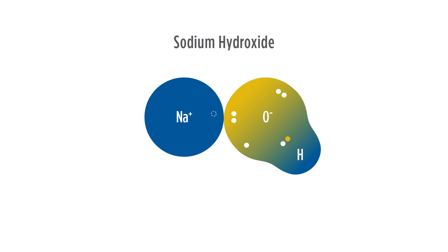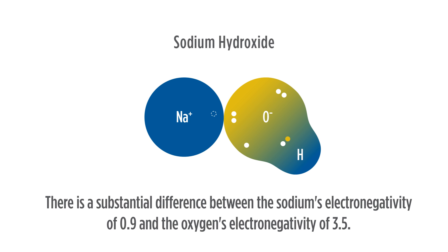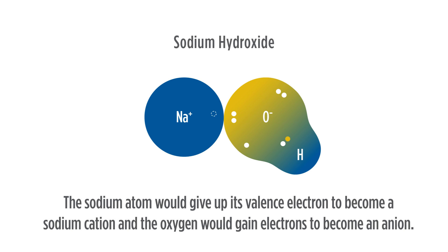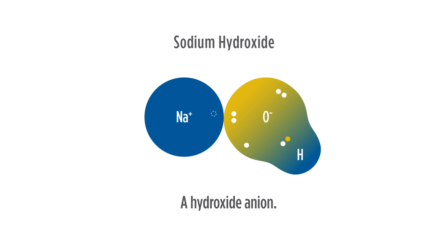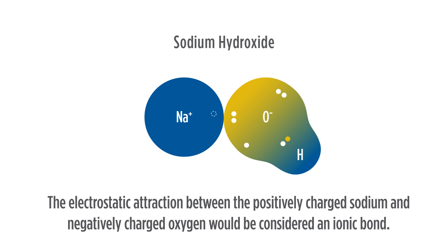For the sodium and oxygen in sodium hydroxide, there is a substantial difference between sodium's electronegativity of 0.9 and oxygen's electronegativity of 3.5. In this case, the sodium atom would give up its valence electron to become a sodium cation and the oxygen atom would gain an electron to become an anion — the hydroxide anion. Therefore, the electrostatic attraction between the positively charged sodium and the negatively charged oxygen would be considered an ionic bond.